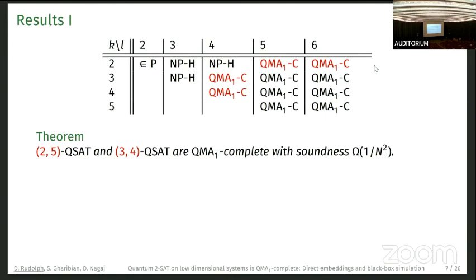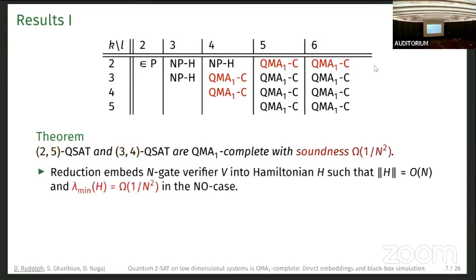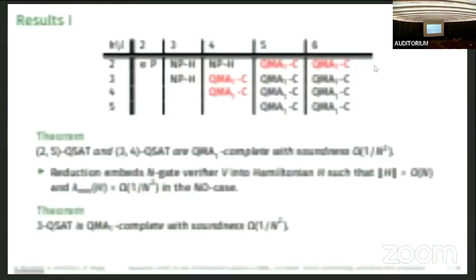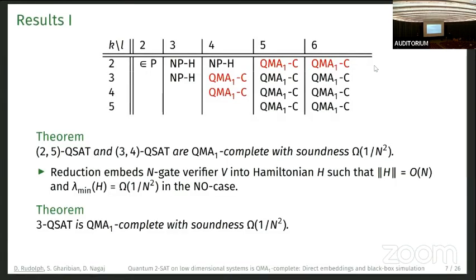For some entries we only know NP-hardness. The black entries were known before. We also have a special result for the soundness of the Hamiltonian problem: when we embed our verifier circuit into H, the norm of the Hamiltonian is bounded by the number of gates, and in the no-case we can lower-bound the eigenvalue by one over n-squared. This matches other circuit Hamiltonian constructions. Our techniques also work for three-QSAT, improving the soundness bound there.